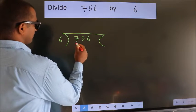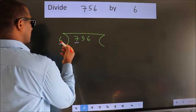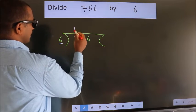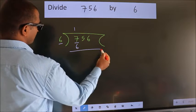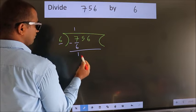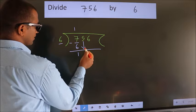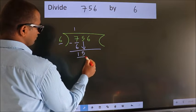Here we have 7, here 6. A number close to 7 in the 6 table is 6 once 6. Now we should subtract, we get 1. After this, bring down the beside number, so 5 down, so 15.